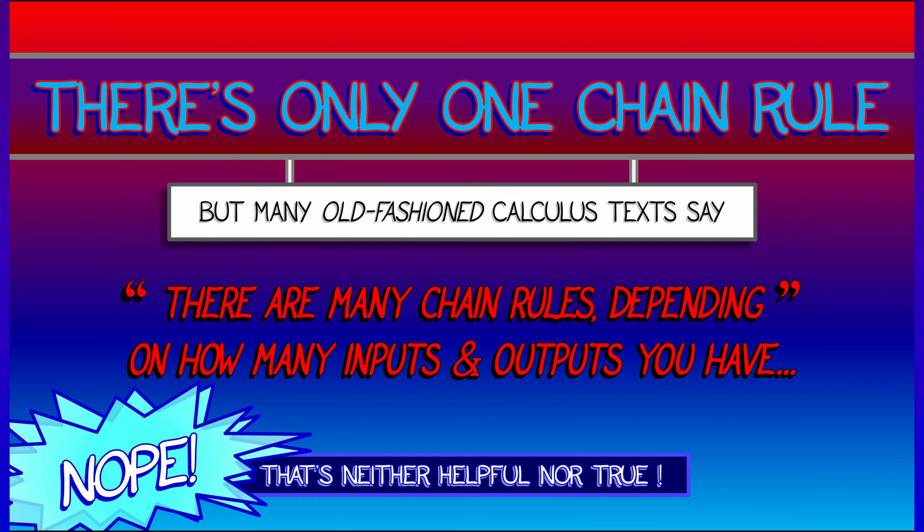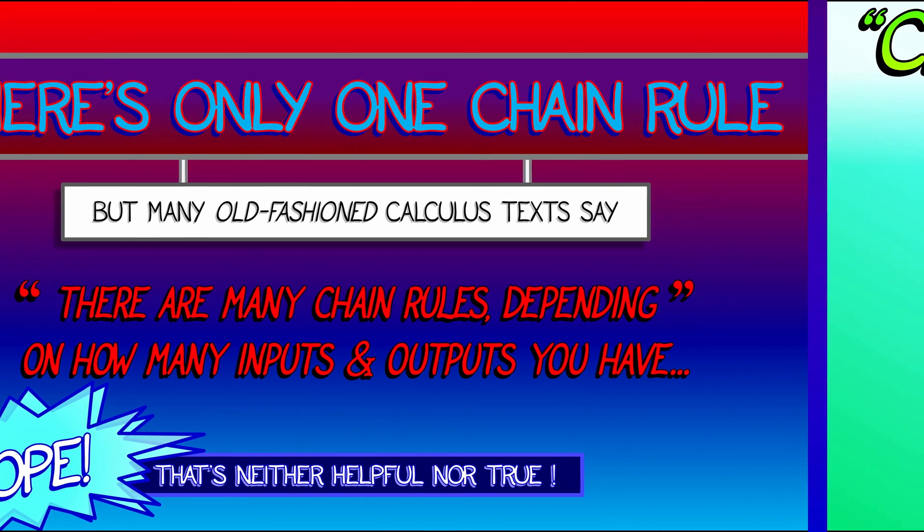None of these dependency trees or any of this stuff matters. There's only one chain rule. There's only one thing that you have to use, and that's matrix multiplication.